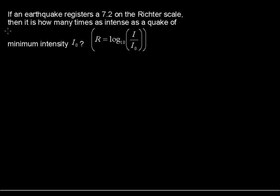If an earthquake registers a 7.2 on the Richter scale, then it is how many times as intense as a quake of minimum intensity denoted I₀, where the Richter scale number equals log base 10 of the intensity of the earthquake divided by that minimum intensity I₀.